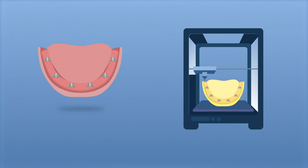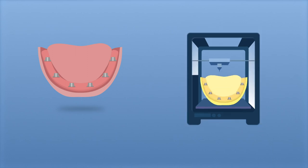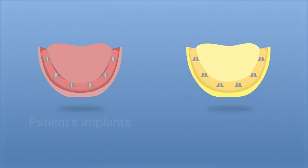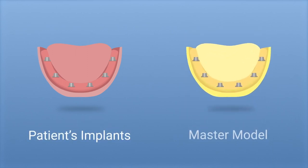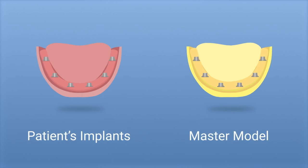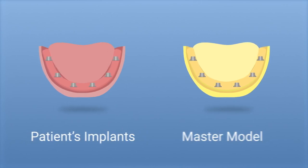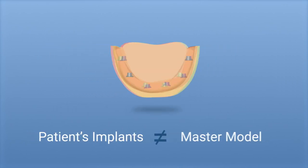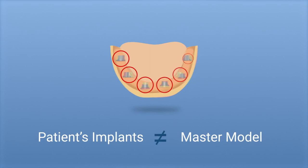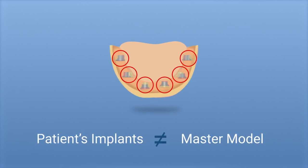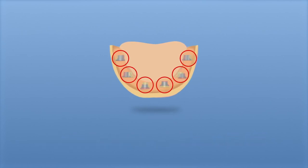Whether you are using conventional methods or CAD-CAM systems when producing the master model, there's no guarantee of matching the patient's implants. If the master model is not identical to the patient's mouth, the prosthesis might not fit the patient's implants, so the structure and the impression must be retaken.